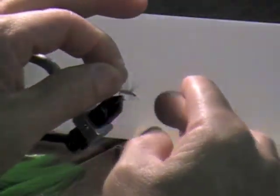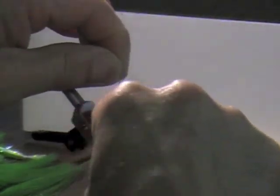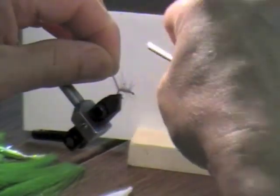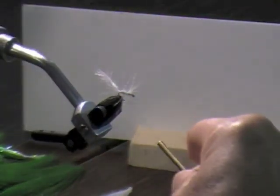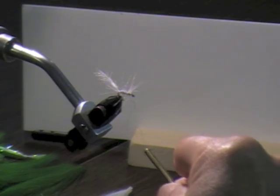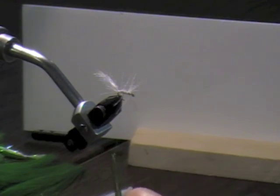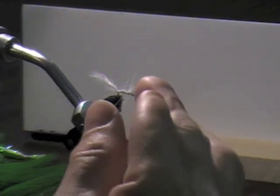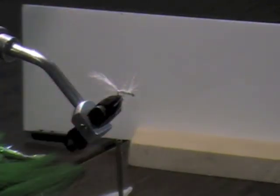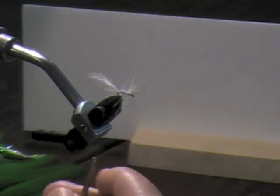Now I have to tell you that this is called the humpy version because it's tied like a humpy. Once you get to the very back end, take your thread and tie it off like that. You didn't twist that stuff? I didn't twist it. I just pinched the fibers together so that they were along the edge.